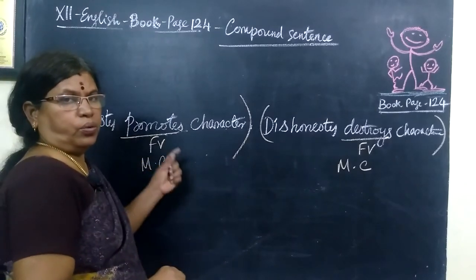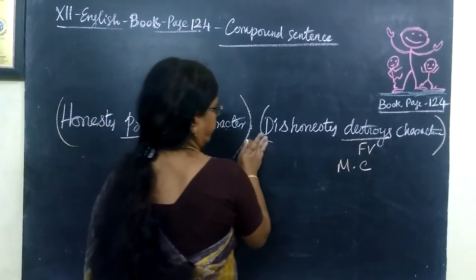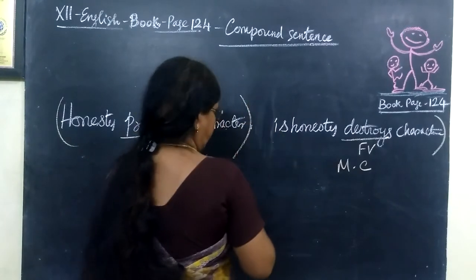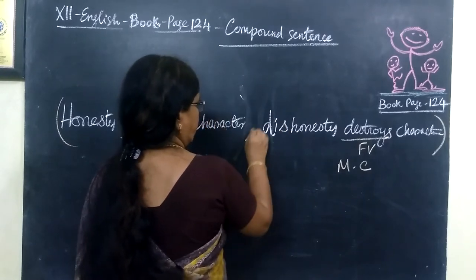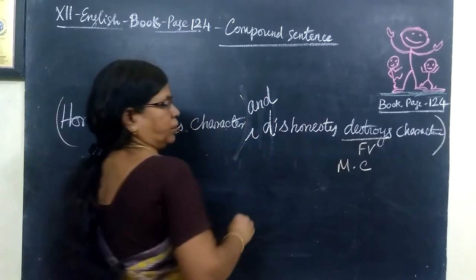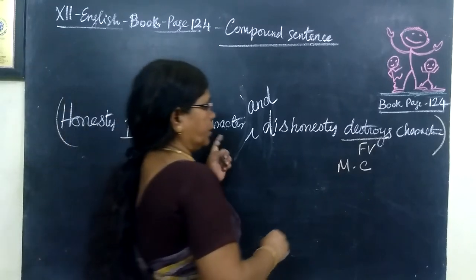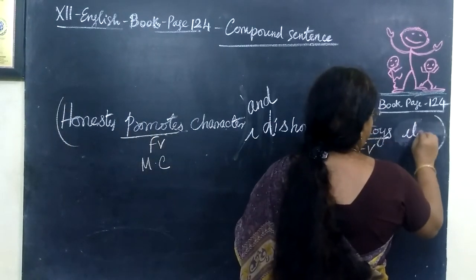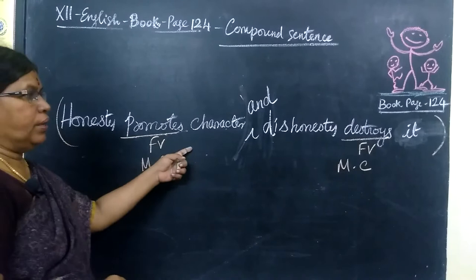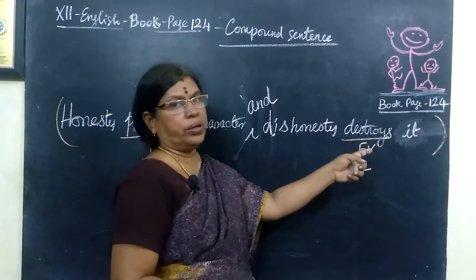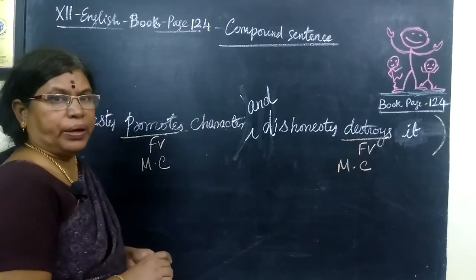I want to join the two main clauses connected by a conjunction 'and'. So before that I should change this capital D. And here I write the conjunction 'and'. The word 'character' is repeated two times, so we write 'it'. Now you read it: Honesty promotes character, and dishonesty destroys it. So two main clauses are connected by the conjunction.